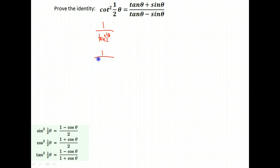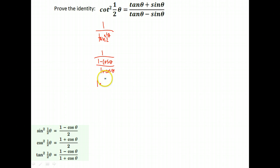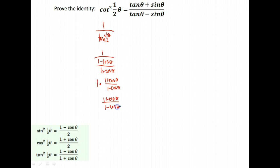So now I have one over one minus cosine theta over one plus cosine theta. We don't like to leave fractions this way, so we invert the bottom fraction and multiply. That gives me one times one plus cosine theta over one minus cosine theta. When I get to a point like this, it makes me a little leery — there's not a whole lot I can do to make that look like tangent.